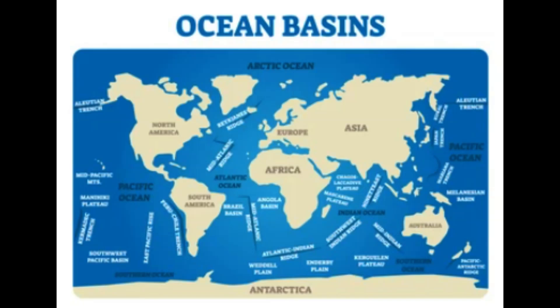The Arctic Ocean Basin is the smallest and shallowest of the five ocean basins, and it is located mostly within the Arctic Circle. It is surrounded by the northern coastlines of Eurasia and North America. The Arctic Ocean Basin is predominantly covered by sea ice, with significant seasonal variations. It is home to unique ecosystems adapted to cold temperatures, such as polar bears, seals, and Arctic cod.